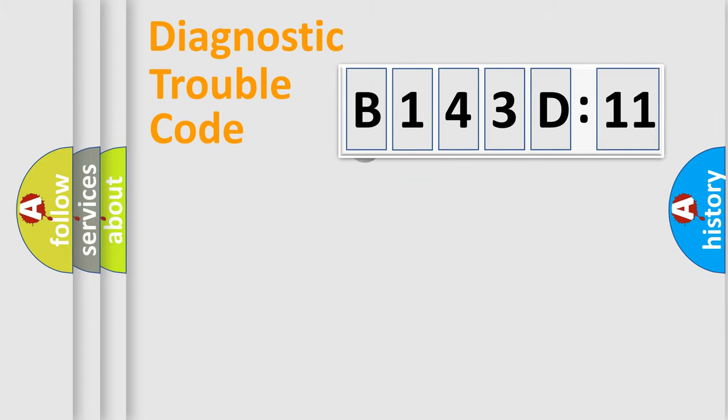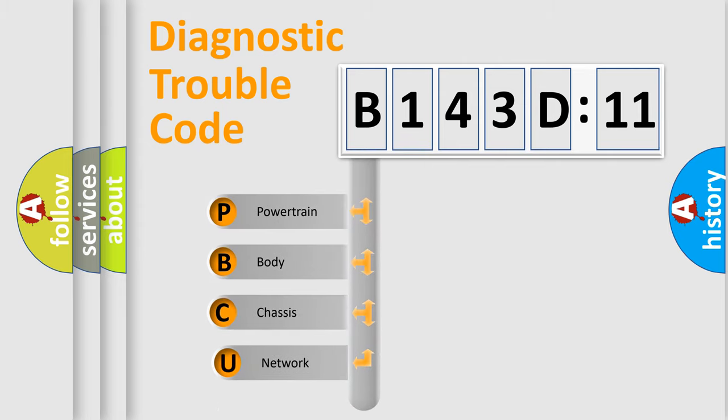Powertrain, Body, Chassis, and Network. This distribution is defined in the first character of the code.